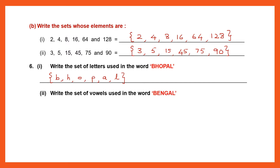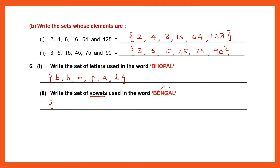Question 2: Write the set of vowels used in the word 'Bengal'. Be careful — read your question carefully. This time you don't have to write all the letters, only vowels. So start with curly brackets and look out for vowels. We have E and A. So the set is {E, A}. Close brackets — because the question says only vowels.